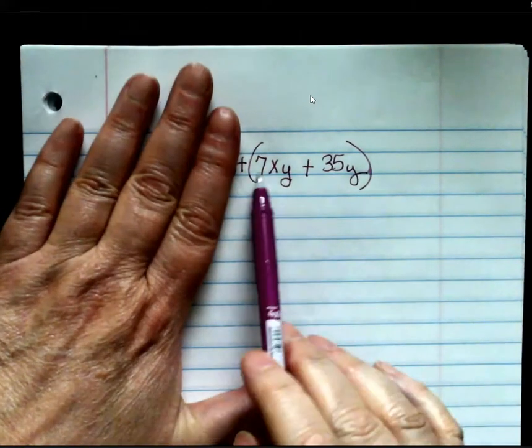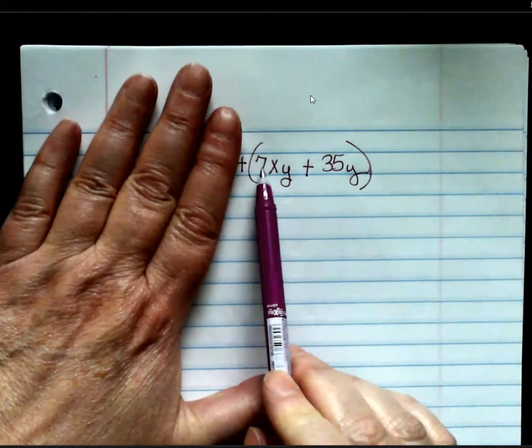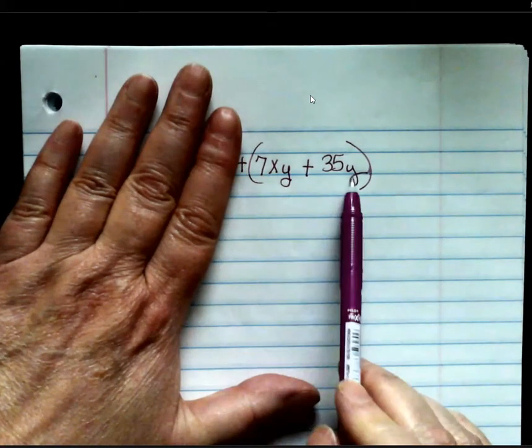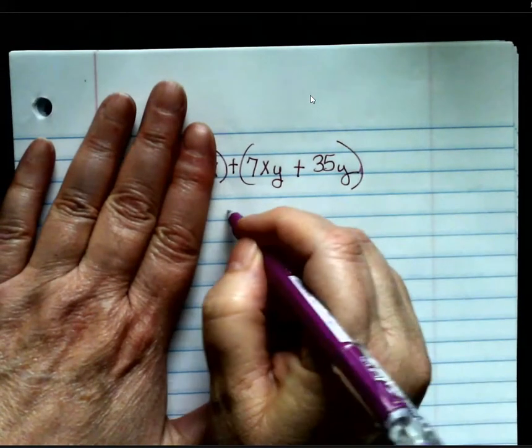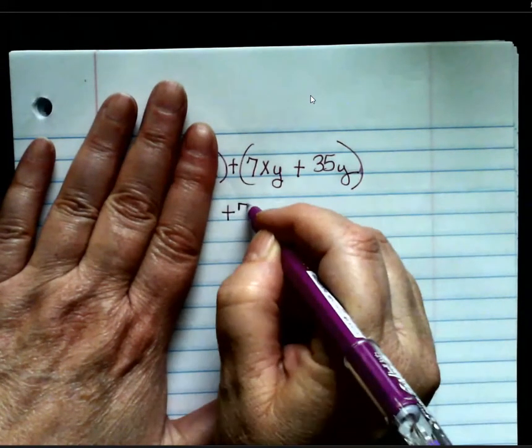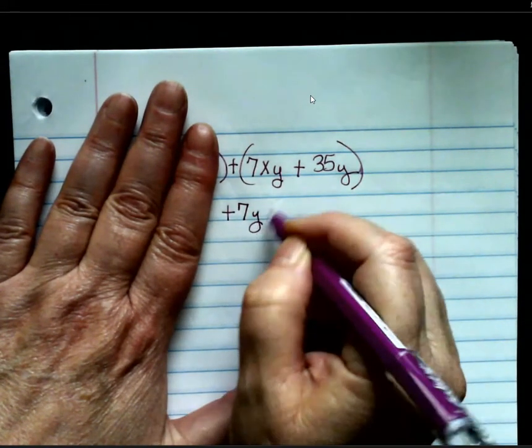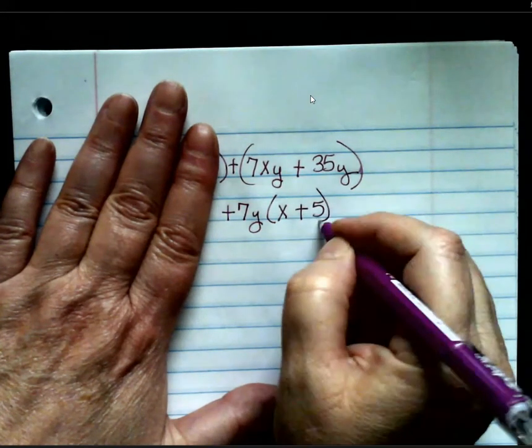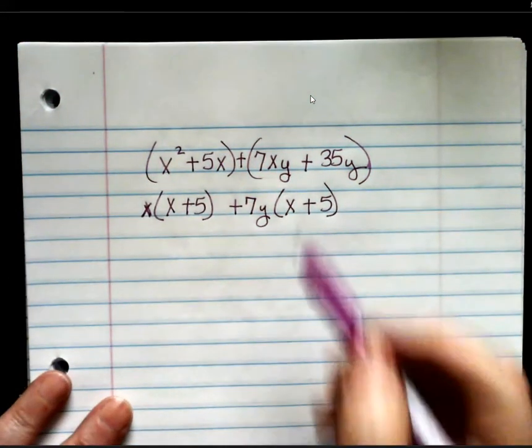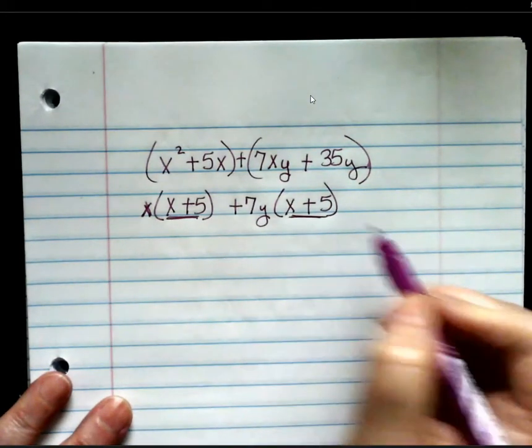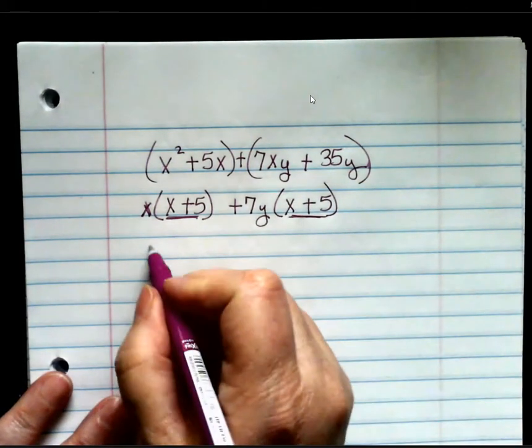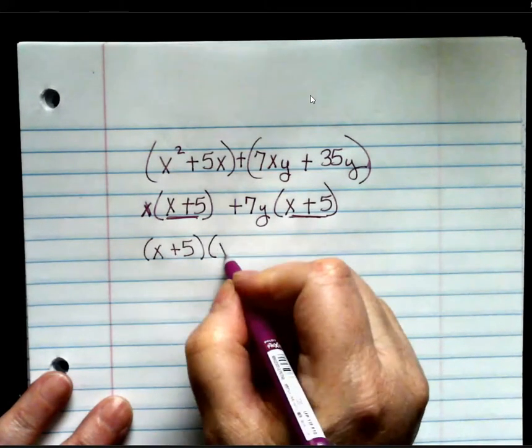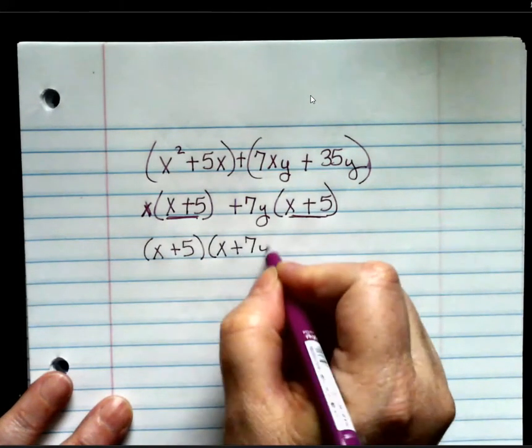Now, I'm going to look over here. I can take out a 7 from 7 and 35 and I can take out a y. So, that's going to be plus 7y will give me x plus 5. Lookie there. Now, I have a common term that I can pull out and then I'm left with x plus 7y.